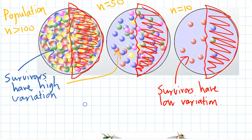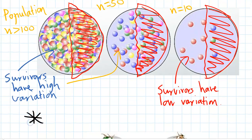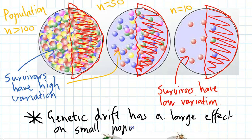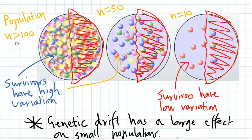That's the really important thing to remember with genetic drift: natural selection happens in larger populations more, but in really small populations, genetic drift actually has a much bigger effect on how that population is going to evolve. So genetic drift has a large effect on small populations. That's natural selection and genetic drift.